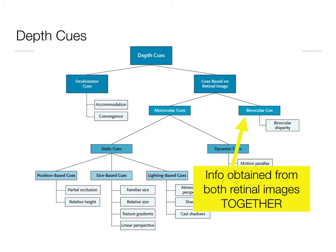This is when we take those two separate retinal images that we had in monocular cues — those static retinal cues and those dynamic cues, those monocular cues where it's just in one eye — and we put them together. So this is information from both of those things together, and primarily all this is is binocular disparity and how we figure out what information came from what retina.